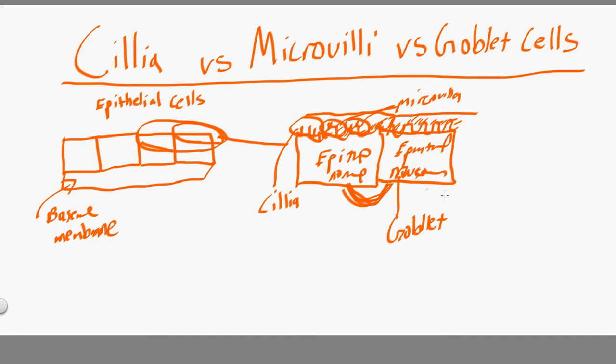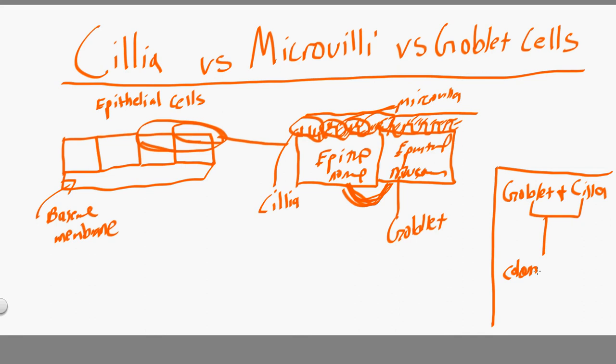As it relates to goblet cells and cilia, these two are only found in the columnar epithelium — only in the columnar. We know there are other shapes: cuboidal, squamous, transitional, and other types of epithelial tissue. But the cilia and the goblet cells are only in the columnar shape, like pillars. You will not find goblet cells and cilia in cuboidal, squamous, or transitional cells.